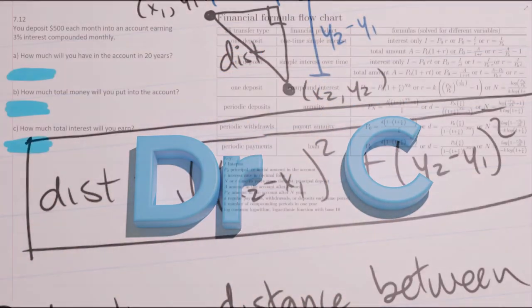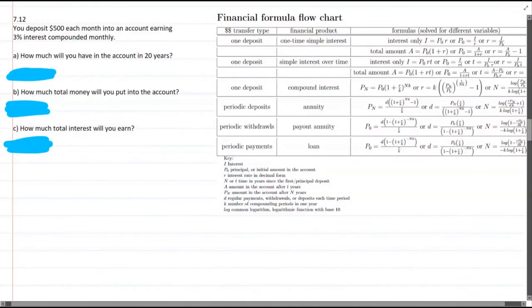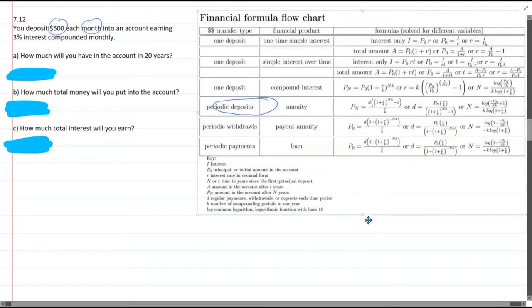So this question we're depositing each month, so we're making a monthly deposit. So right away, I know we're using periodic deposits, and that puts us in this row. So it's just a question of which of these three formulas should we use, one, two, or three.